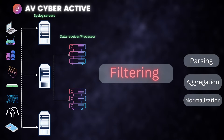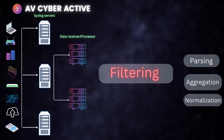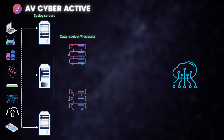The fourth process is filtering. Although optional at this stage, it can also be done at a previous syslog server or collector level. It is the process of filtering out or pipelining only the logs that are of interest.